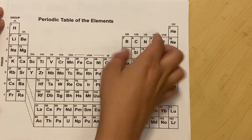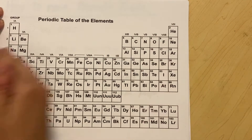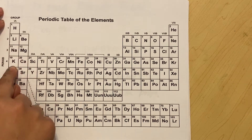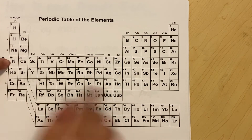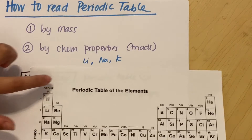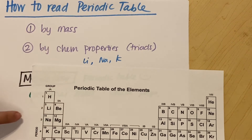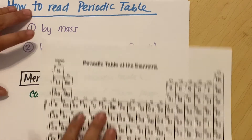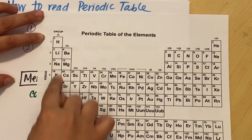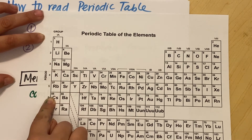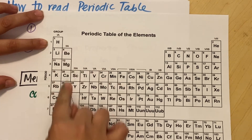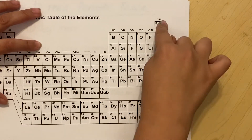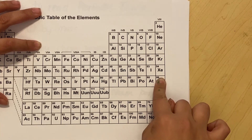As my elements come down to the next row and go across, I then have my triads — like lithium, sodium, and potassium — all right here as a triad together. So things within this column should act similarly by their chemical property. Things in this column should act similarly by their chemical property. They're all going to act very similarly.